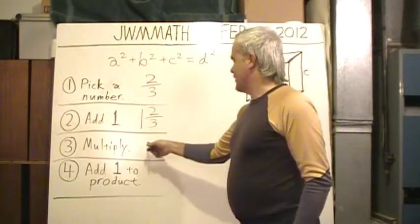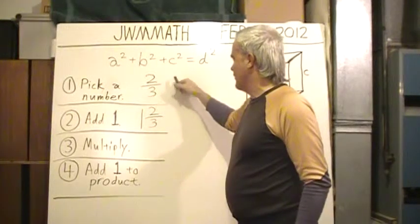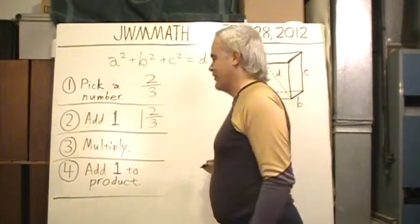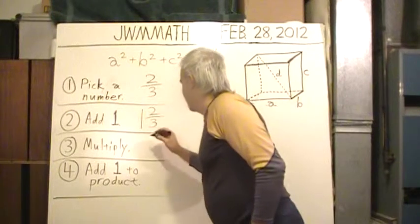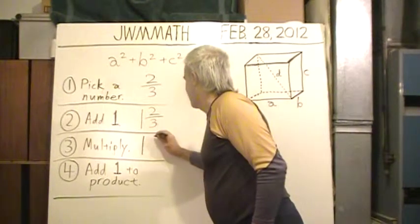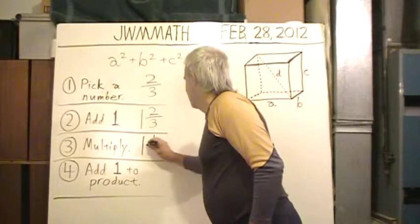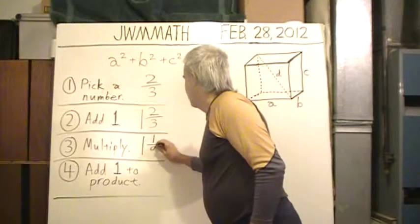Then, next step, multiply two-thirds by one and two-thirds. And if you do that multiplication and simplify, make it a mixed number, it'll be one and one-ninth.